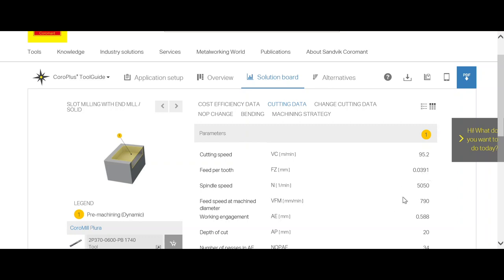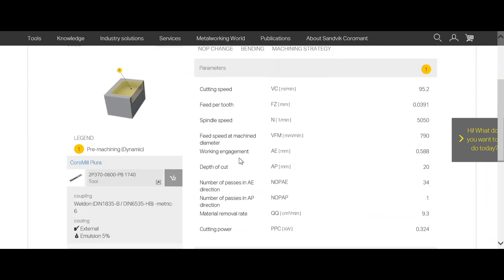Correspondent RPM and table feed. And radial engagement AE in millimeters 0.588, so almost 10% of our cutter diameter engaged with each pass. So we are taking a full depth of 20mm with radial engagement of 0.588 per pass.